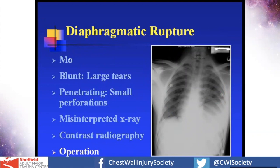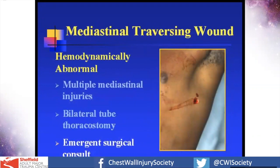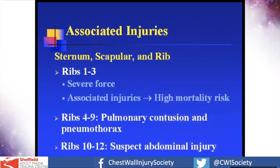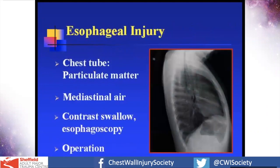Diaphragm rupture on the left is very easily seen, but on the right it's very difficult and may require thoracoscopy to diagnose. From a thoracic perspective, it's easy to treat from either the chest or abdomen depending on radiological findings — it's something we share with general surgeons depending on the pattern of chest trauma. We do sometimes see traversing wounds across the mediastinum, which are pretty dramatic, tending to occur through gunshot wounds, and require very complicated and prompt workup.